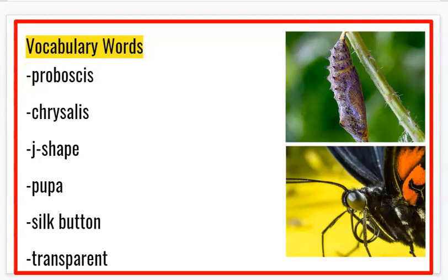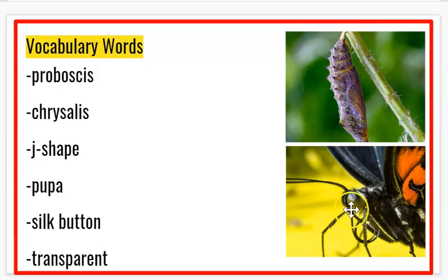Proboscis. A proboscis is a sucking mouth part that is flexible. It's also located on a butterfly. This is the proboscis — sometimes people refer to it as a tongue, but it's not really a tongue, it's a proboscis. It extends out, and that is what a butterfly uses in order to get its nectar.